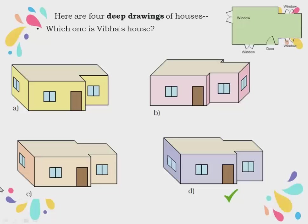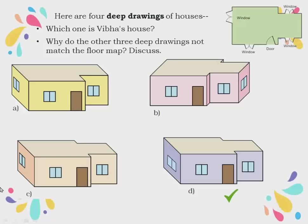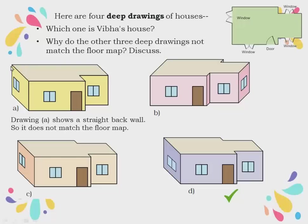Now I will explain why D is Vibha's house and why the other three deep drawings don't match the floor map. Drawing A shows a straight back wall, but according to the map the wall has a cut. So drawing A is not Vibha's house.